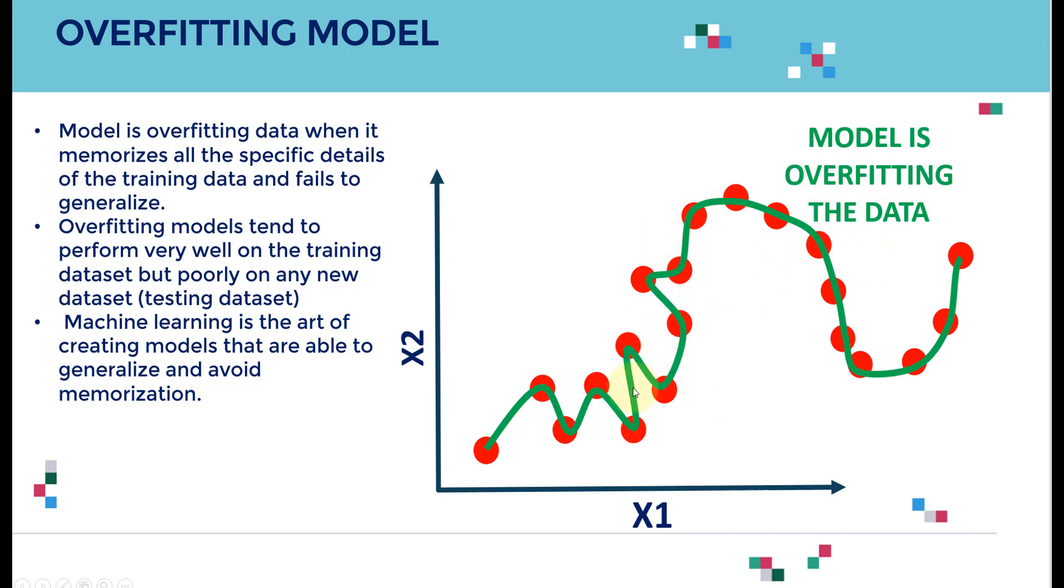The model has learned all the ins and outs of the training data. From a high level, you might say that's a good model—it's generating almost zero error. However, these models are overfitting the training data. They learn all the details but fail to generalize. If you apply this model in practice, they don't do well on the testing data.